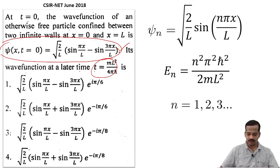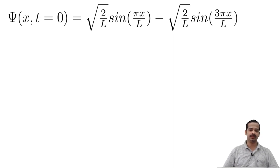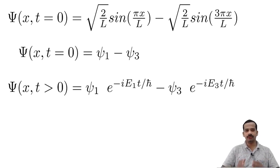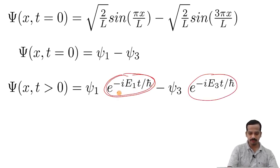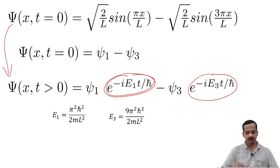Now let me write this state. The state at t equal to 0 — I have taken root(2/L) inside, so the state at t equal to 0 is already written in terms of energy eigenstates. In symbolic form, it is psi-1 minus psi-3. The state at later time is obtained by plugging in the respective time-dependent exponential factors: e to the power minus i E-1 t over h-bar multiplied with psi-1, and e to the power minus i E-3 t over h-bar multiplied with psi-3. E-1 and E-3 are given by the energy eigenvalue equations.